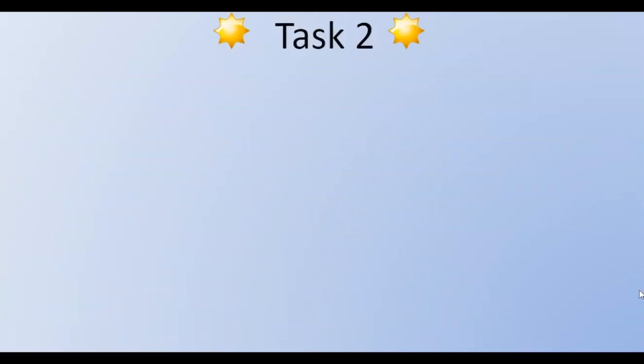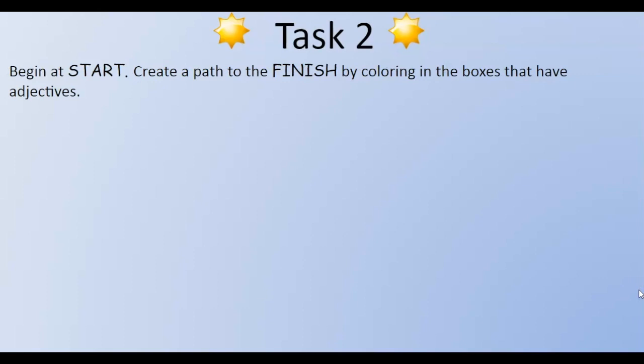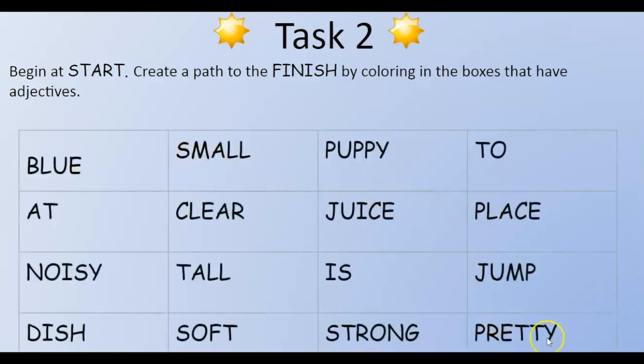In this task, you are going to begin at the starting point. And you are going to create a path to the finish by coloring in the boxes that have adjectives. It would be lovely if you could do this in your copy book and then color the blank spaces. We have a list of words where you have to begin in the start and color until you get to the finish line. Pause the video so you can do this activity.